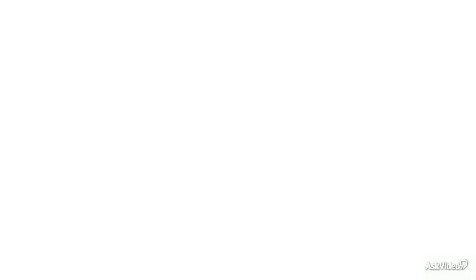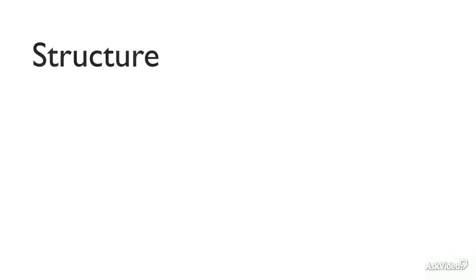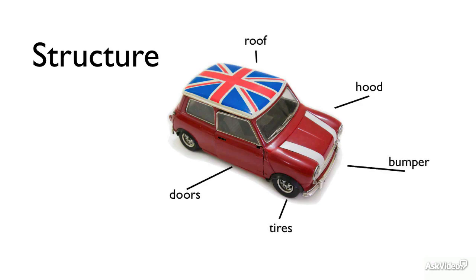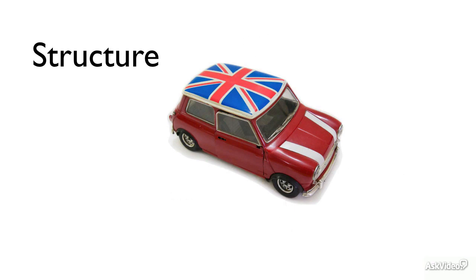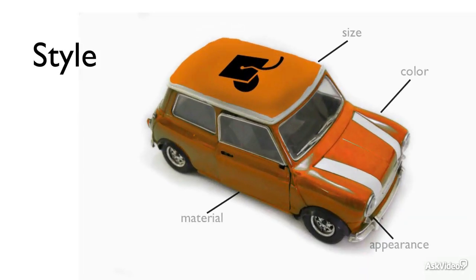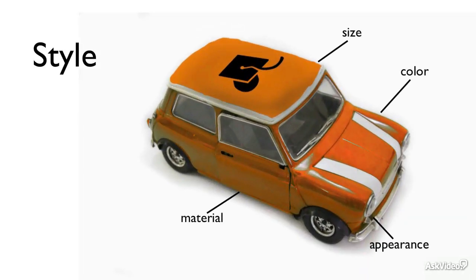To remind you, we use the example of a car. HTML is really about all the structural aspects of the car — that could be the tires, the roof, the bumpers, anything structural. CSS, on the other hand, with style, is all about the size, the color, the appearance, and the materials that you use.